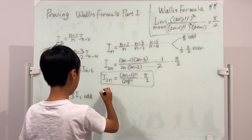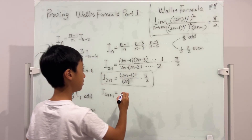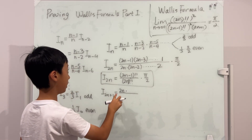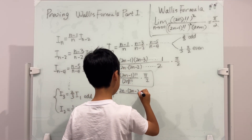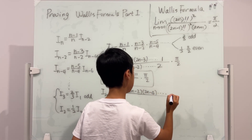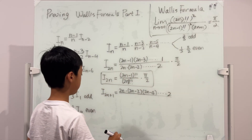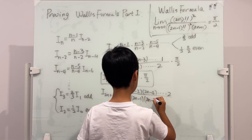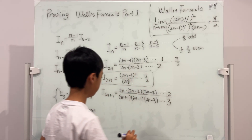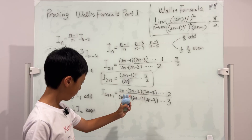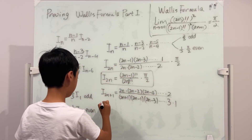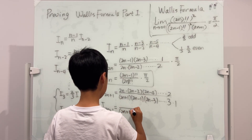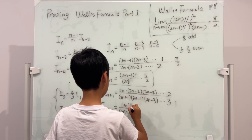Now for the odd case, I_{2n+1}: the numerator is 2n(2n−2)(2n−4)…×2, and the denominator is (2n+1)(2n−1)(2n−3)…×3. The numerator is (2n)!! and the denominator is (2n+1)!!. And multiplying by I_1 = 1 doesn't change anything. So I_{2n+1} equals (2n)!! / (2n+1)!!.